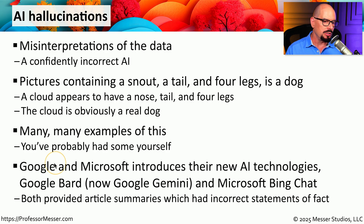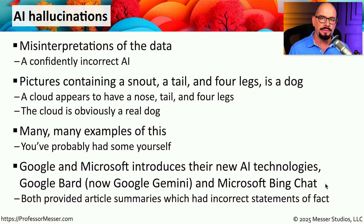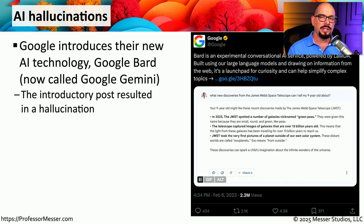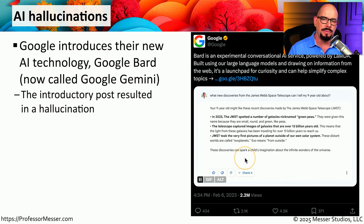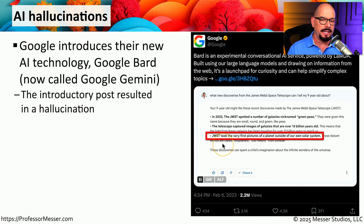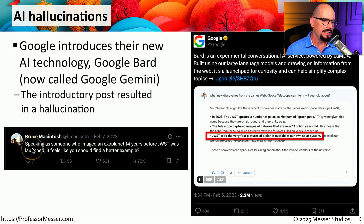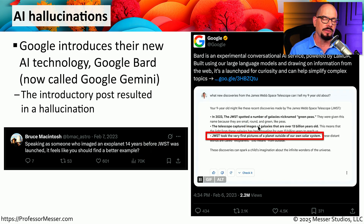A practical example of an AI hallucination was when Google and Microsoft announced their new AI technologies. Google announced Google Bard — now Google Gemini — and Microsoft introduced Microsoft Bing Chat. Both engines provided summaries of articles that had completely wrong information. In Google's announcement, the AI responded to the question "What new discoveries from the James Webb Space Telescope can I tell my nine-year-old about?" and claimed the telescope took the very first picture of a planet outside of our solar system. Bruce McIntosh replied, "Speaking as someone who imaged an exoplanet 14 years before the James Webb Space Telescope was launched, it feels like you should find a better example." This points out that even the best AI engines can suffer from an AI hallucination.